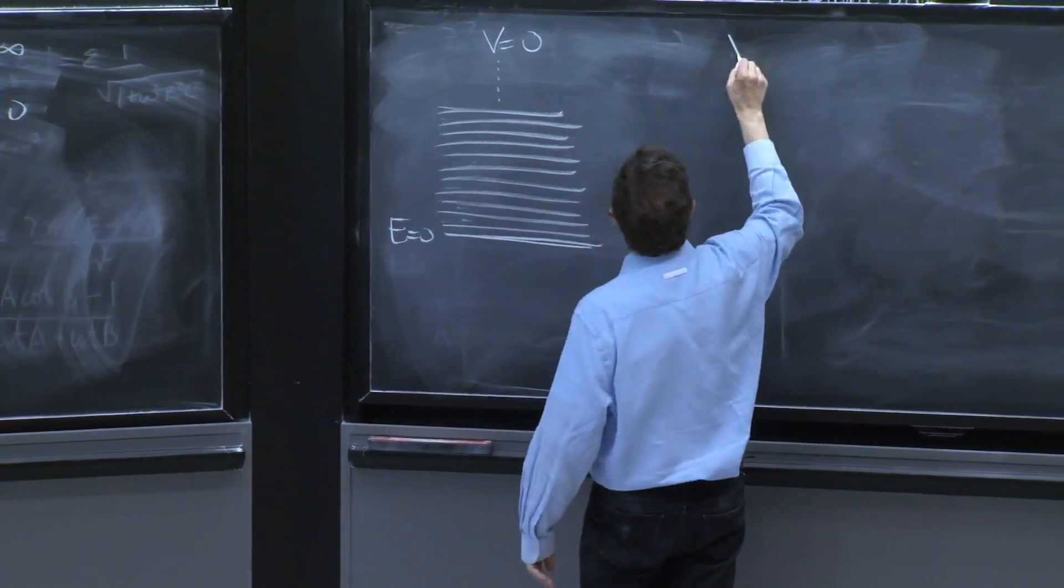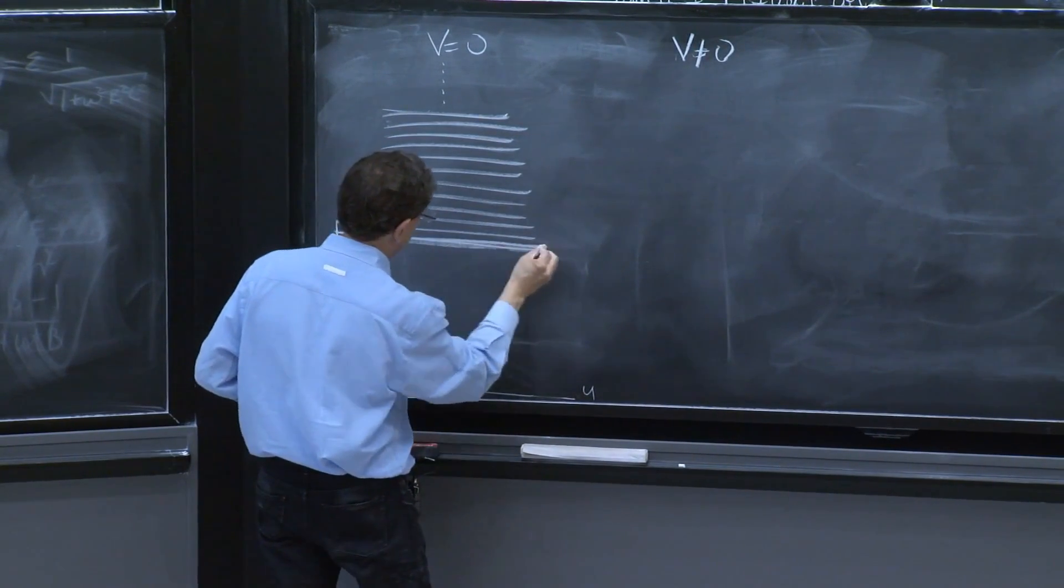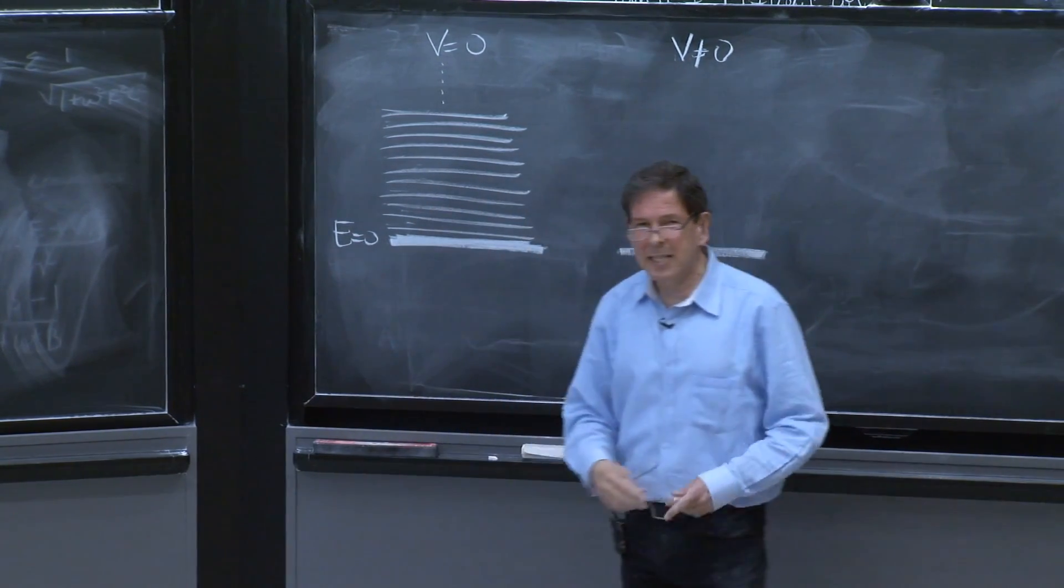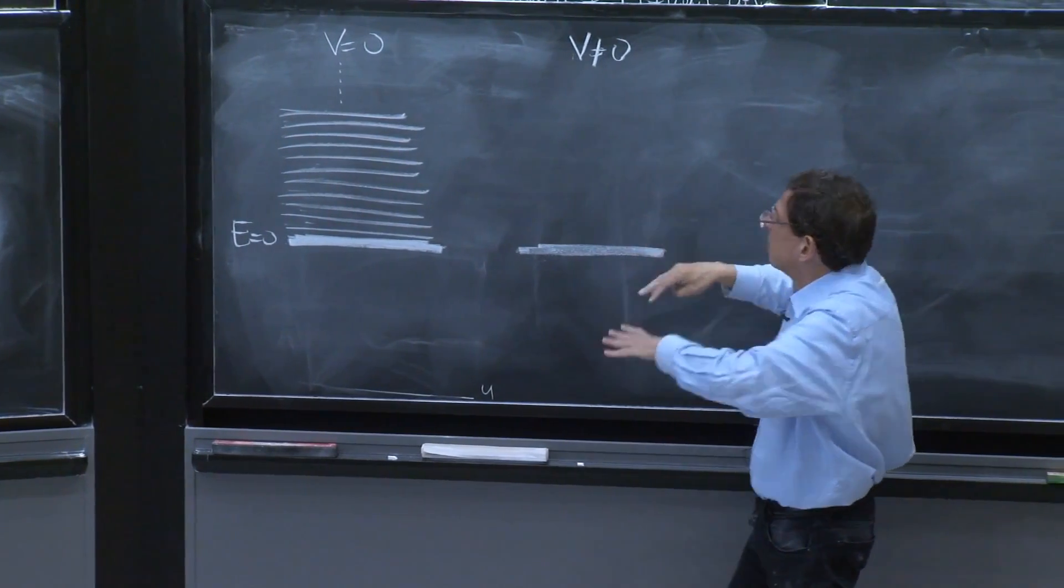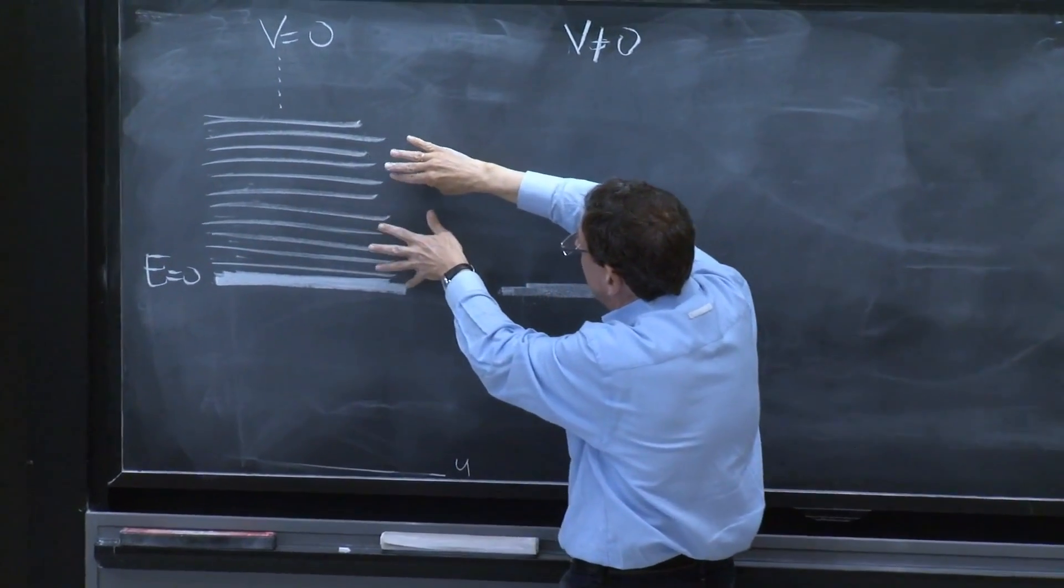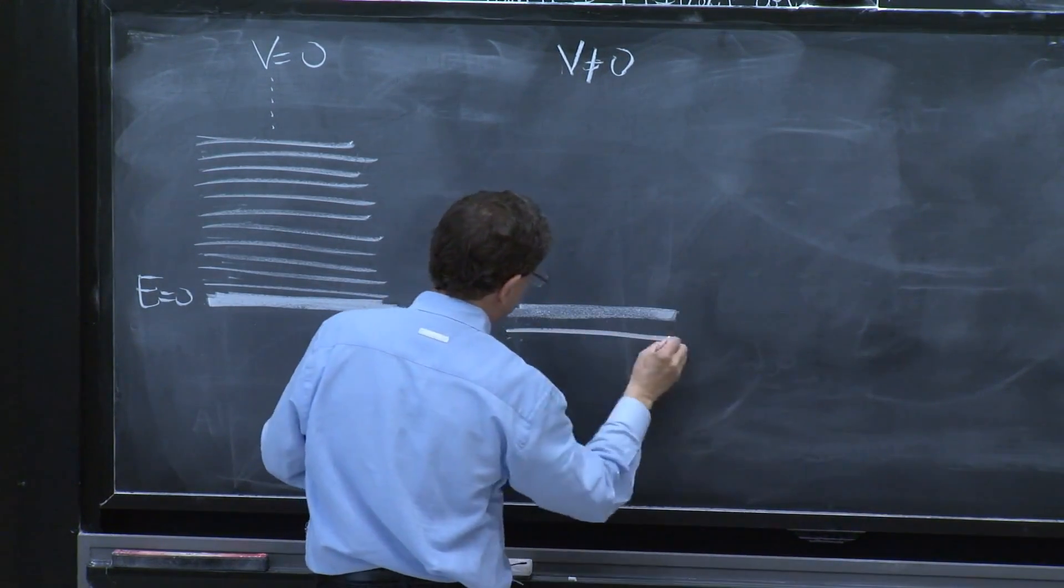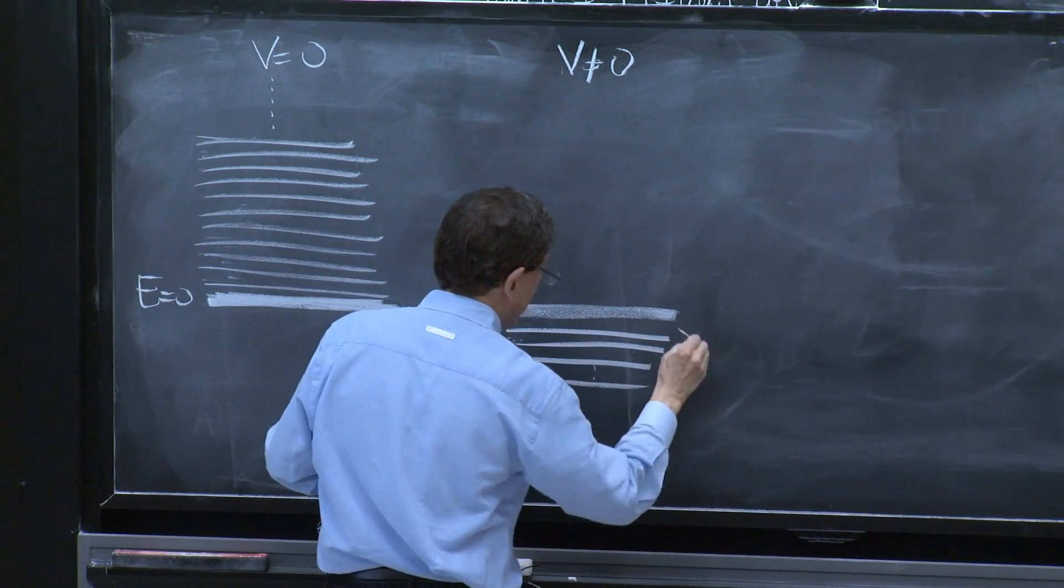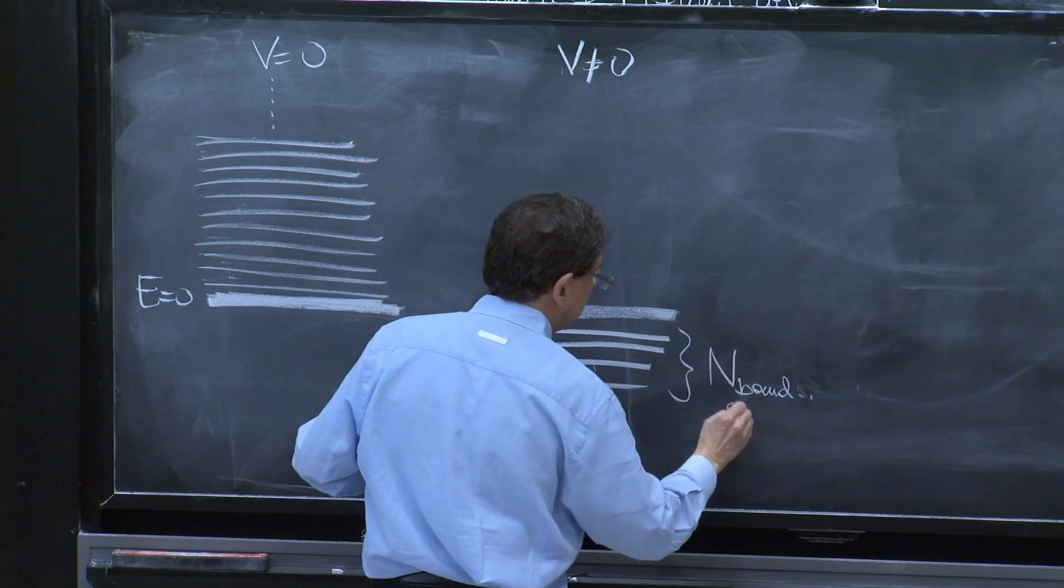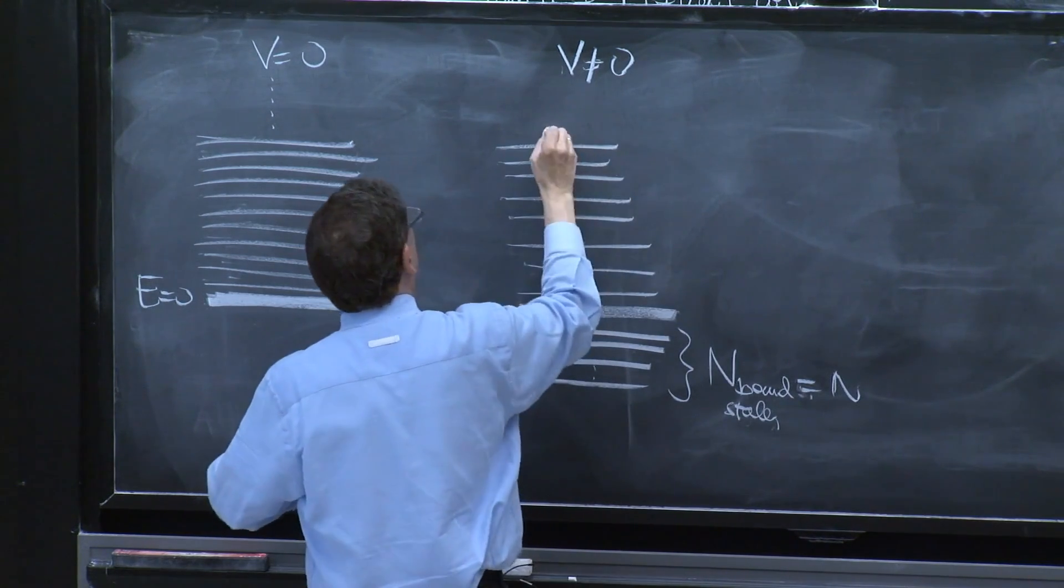But what happens by the time v is different from 0? Here is the e equals 0 line. As we discussed, as you change the potential slowly, these are going to shift a little. And some are going to go down here. They're going to become bound states. There's going to be a number of bound states, n bound states. And then there's going to be still some states here that also go to infinity.